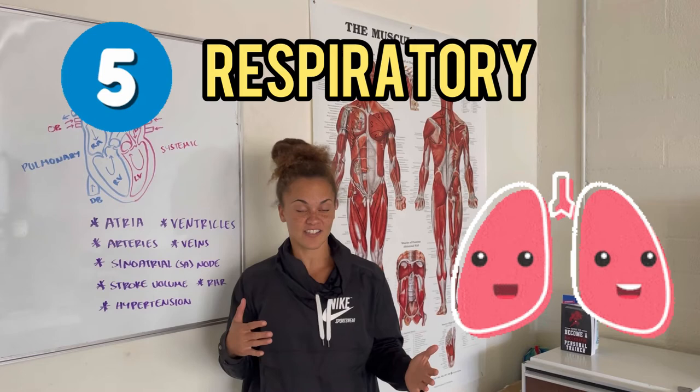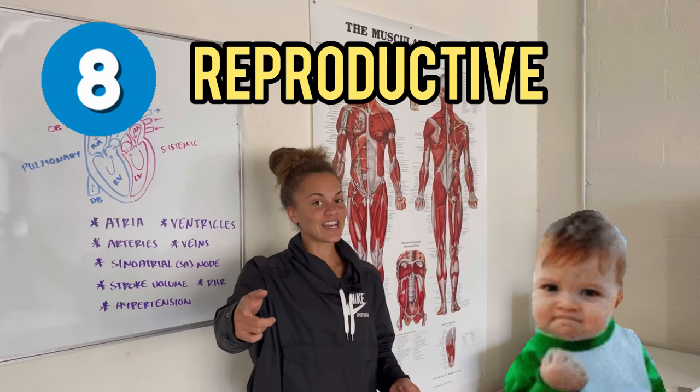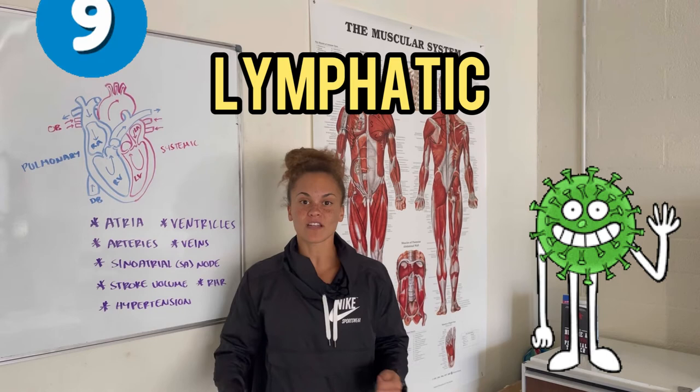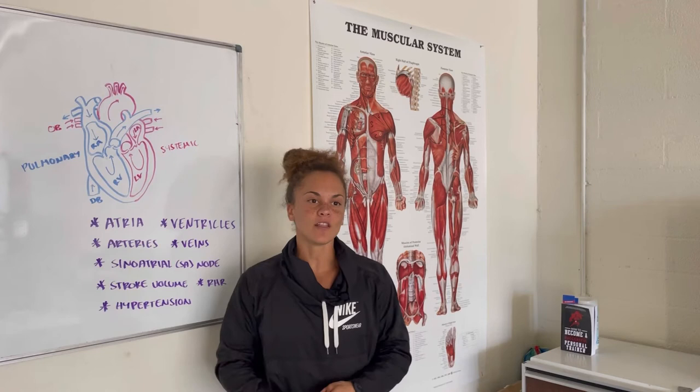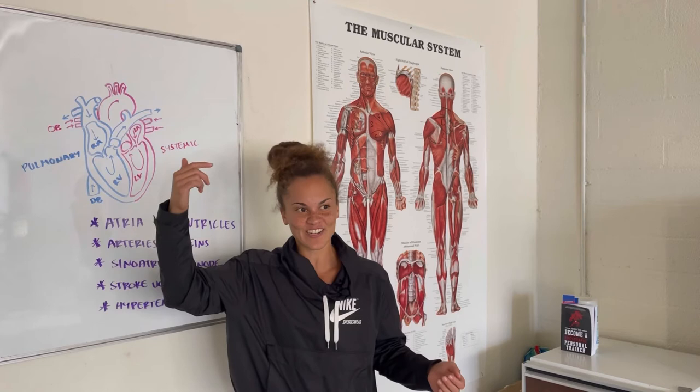We have the digestive system — when we eat and after we eat, of course. Then we have the urinary system, when we go to the bathroom. The reproductive system — why all of you guys and myself are here today. We have the lymphatic system: nodes, tissues, and organs throughout the body that release toxins whenever we get sick. We have the endocrine system — it's our hormone system, so it's going to have the thyroid, the pituitary gland. The pituitary gland is the master gland.